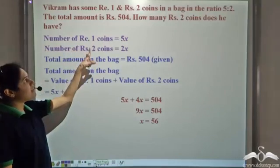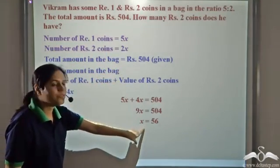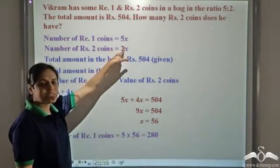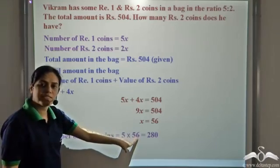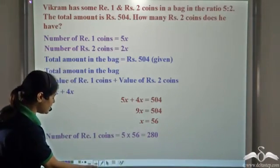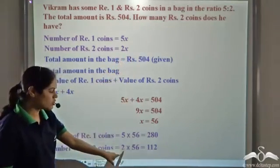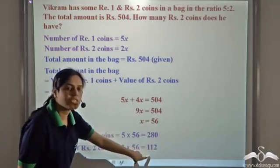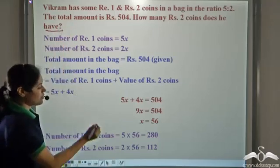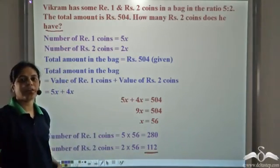Now we can find the number of Rupee 1 and Rupee 2 coins since we have found x. The number of Rupee 1 coins is 5x, that is 5 into 56 which is 280. The number of Rupee 2 coins is 2x, that is 2 into 56 which is 112. So Vikram has 112 Rupee 2 coins in the bag.